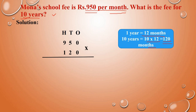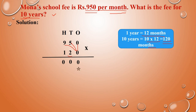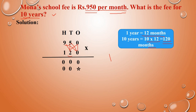So arrange in columns: 950 into 120. We start from the ones place: 0 into 0 is 0. Next, 0 into 5: any number multiplied with 0 is 0. Next, 0 into 9: that is also 0. Next, tens place — write 0 as a placeholder. So 2 into 0 is 0. Next, 2 into 5: 2 fives are 10. So 10 means write 0, carry 1. Next, 2 into 9: 2 nines are 18; 18 plus carry 1 is 19.